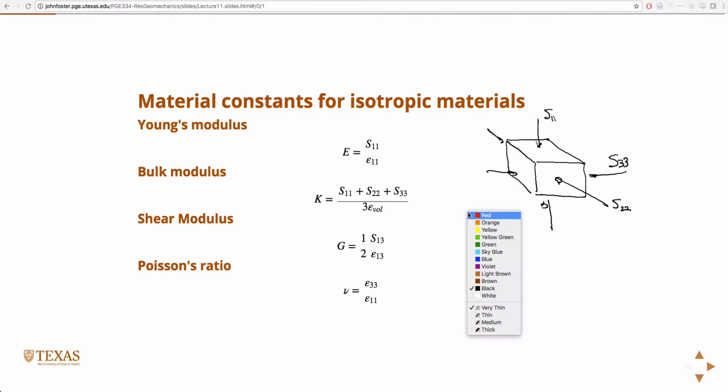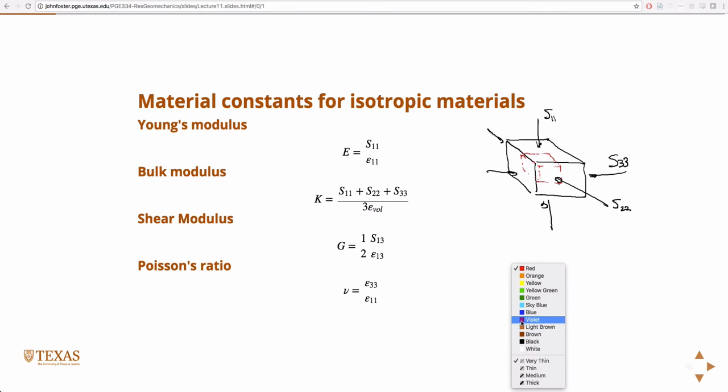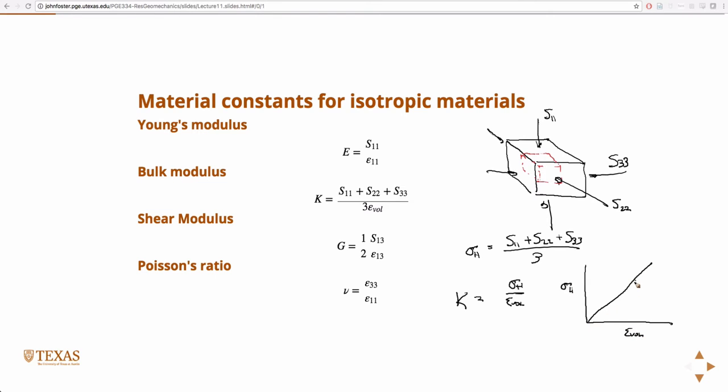And then my cube's gonna deform into something smaller. I think we already defined the hydrostatic stress, which is the sum, the average of the normal stresses. So then the bulk modulus is the hydrostatic stress over the volumetric strain. Or if you were to plot that, the hydrostatic stress versus the volumetric strain, this is K.